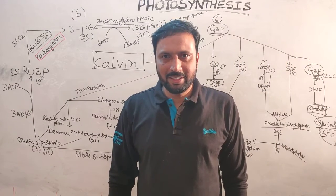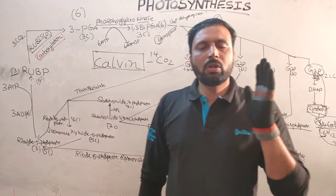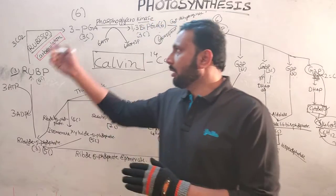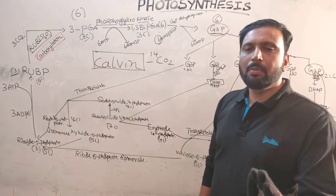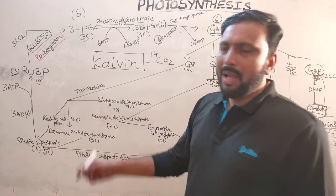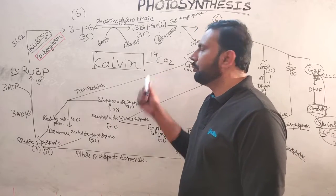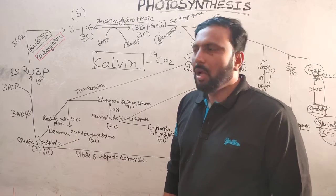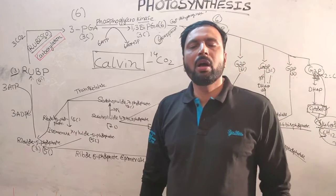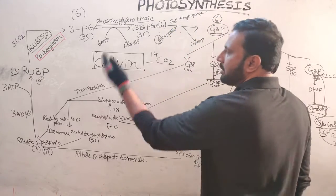Hello, good morning. I am BSR, botany lecturer. Today our topic is photosynthesis — specifically the dark reaction. The dark reaction depends on light products but not on light directly. In the dark reaction, especially the C3 pathway — first reported by Melvin Calvin, Benson, and Bassham — Calvin conducted experiments on Chlorella plants using CO2-14 radioactive isotope, discovering first stable and intermediate compounds using autoradiography and chromatography techniques.